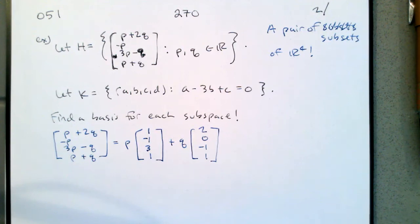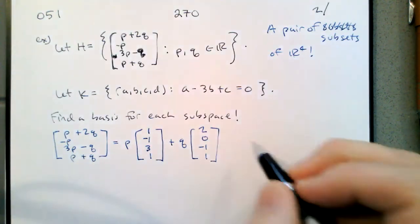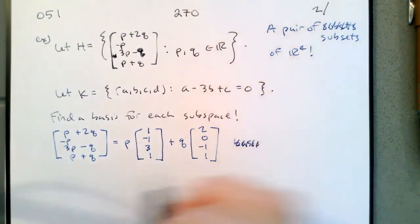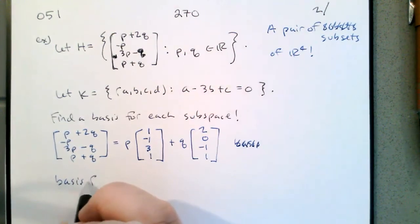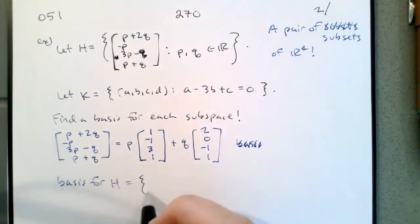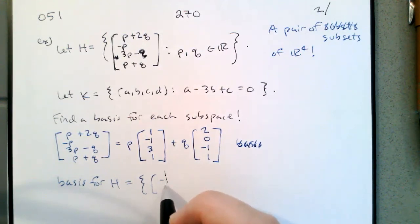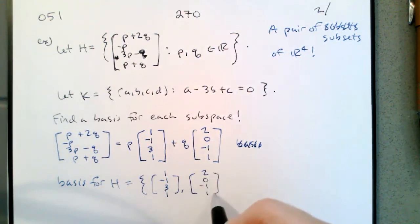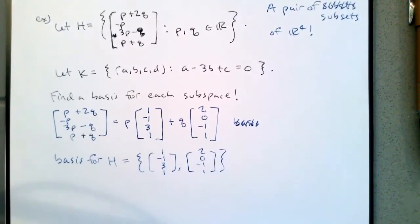So our spanning set is the vectors {1, -1, 3, 1} and {2, 0, -1, 1}. Since there are only two vectors and one vector is not a multiple of the other, we can see that these two vectors are linearly independent. So a basis for H is this set of two vectors.